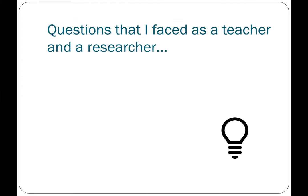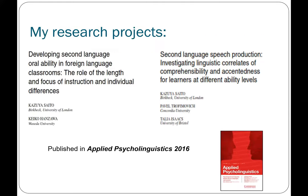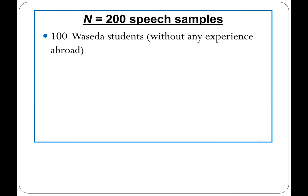So now here's a question: what does that actually mean? His comprehensibility score was 4.0. Is his second language English proficiency good or unsatisfactory? And why? In order to answer this very basic question, I decided to do two projects, both of which were published in Applied Psycholinguistics in 2016. In this project, I recruited 200 Japanese speakers of English.